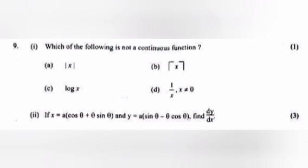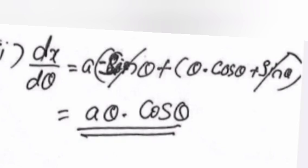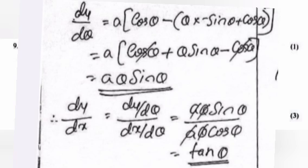If x = a(cos θ + θ sin θ) and y = a(sin θ − θ cos θ), find dy/dx. Answer: dx/dθ = a(−sin θ + θ cos θ + sin θ) = aθ cos θ. dy/dθ = a(cos θ + θ sin θ − cos θ) = aθ sin θ. Therefore dy/dx = (aθ sin θ)/(aθ cos θ) = tan θ.